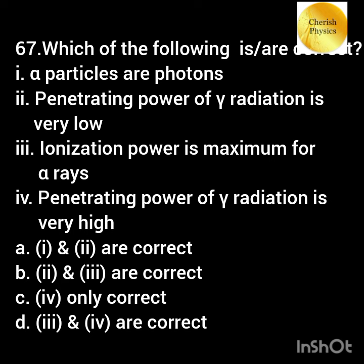Which of the following statements are correct? First, alpha particles are photons. Second, penetrating power of gamma radiation is very low. Third, ionization power is maximum for alpha rays. Fourth, penetrating power of gamma radiation is very high.